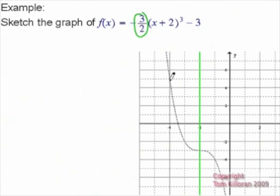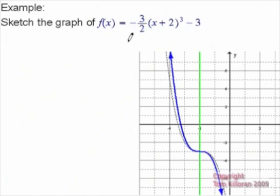...we're going to make sure that the graph is going to get closer to this vertical line that goes through our point here. And when we do that, we're going to get our nice graph of negative 3 halves x plus 2 all cubed minus 3.